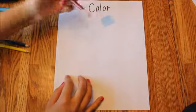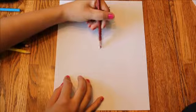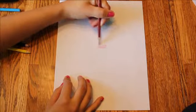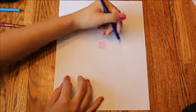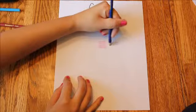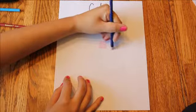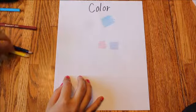Then we're going to talk about primary colors. The first primary color is red, the second primary color is blue, and the last one is yellow.